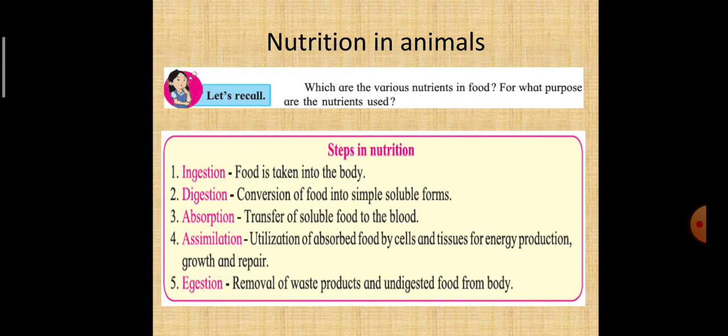And for what purpose the nutrients are used? They are used for growth and wear and tear of the body. So when nutrition in animals comes in picture, you have to consider certain factors. The three basic factors are the need for nutrients, what is the need of nutrients for animals, mode of ingesting the food and its use in the body.